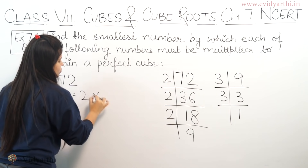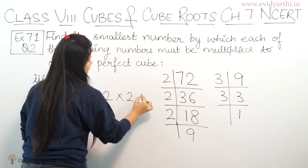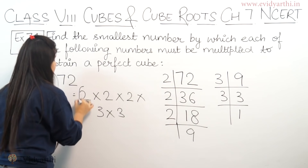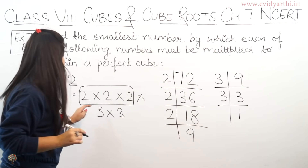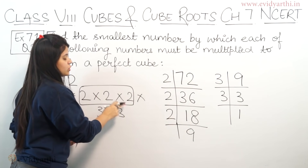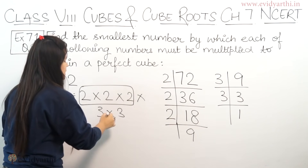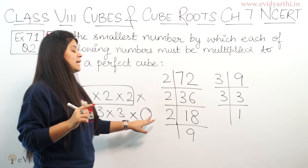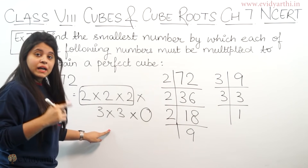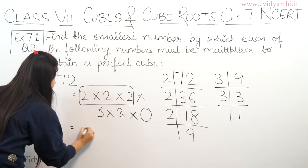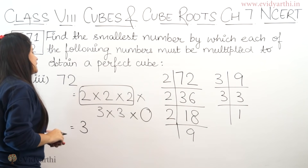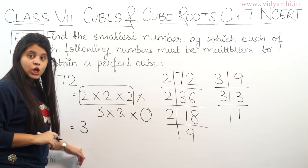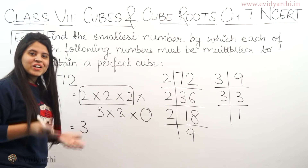Now let's write it down: 2 × 2 × 2 × 3 × 3. Here we have a triplet of 2s — that is 2 × 2 × 2. But 3 appears only twice. One more occurrence is missing. So if we multiply by 3, it will also form a triplet. So if we multiply 72 by 3, the resulting number will be a perfect cube.